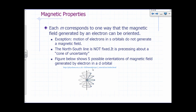Why is the quantum number M called the magnetic quantum number? Each possible M value corresponds to one way that the magnetic field generated by an electron can be oriented in space. Electrons in S orbitals (L equals 0, M equals 0) do not generate a magnetic field from orbital motion. For P orbitals with L equals 1, M can be plus 1, 0, or negative 1 — three possible orientations of the magnetism. That's how M distinguishes between the three orbitals in a P subshell.